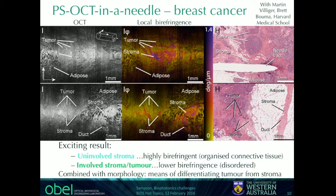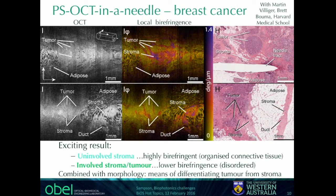This slide demonstrates a rather exciting result: you can see contrast in this region here, which very nicely differentiates benign stroma tissue — which has higher birefringence because of its more ordered structure and greater quantity of collagen — from tumorous tissue, which has a lower level of collagen and more disordered structure, and typically shows lower birefringence. There is very good correspondence with the histology and a great deal of difficulty differentiating that from the straight OCT image. We think that's a very exciting development in adding additional contrast to the standard OCT measurement.